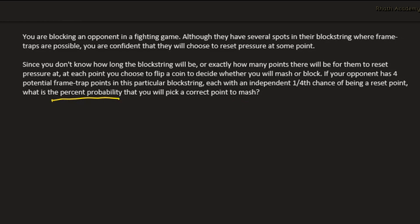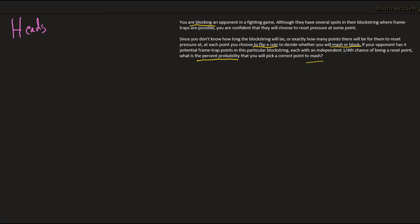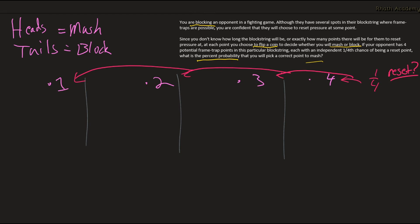Alright, so we're looking for the percent probability that we mash at any correct point. Remember, we are the defending player. And since we don't know at what point they're going to reset, we decide to flip a coin to decide whether we mash or block. So let's say that if we get heads, then we'll mash, and if we get tails, then we'll block. And remember, our opponent has 4 frame trap points, each with a 1/4th chance of being the reset point. So long as we recognize that there's only 4 possible outcomes where we mash at a correct spot, this problem actually becomes pretty simple. We just need to find the individual probabilities of each outcome we're looking for, and then we can add them up, and then we'd be done.